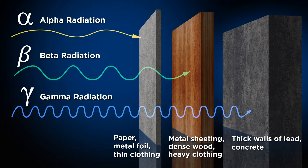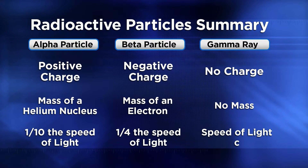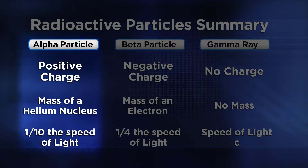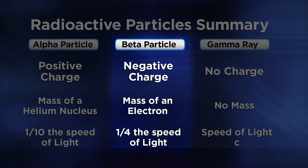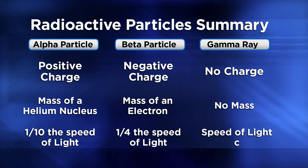Gamma rays carry the most energy of the three radioactive decay products, and thick concrete or lead is needed to shield or stop them. This chart summarizes the characteristics of alpha particles, beta particles, and gamma rays nicely, and it's available as a graphic organizer in our Chemistry Matters Toolkit.